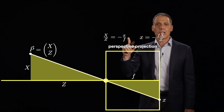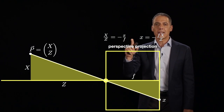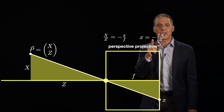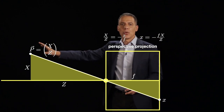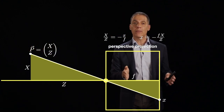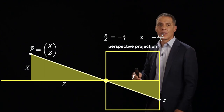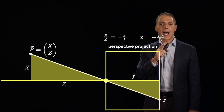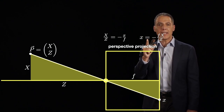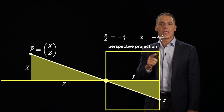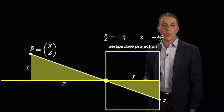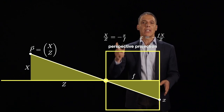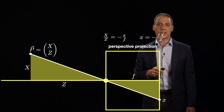Writing this differently: little x equals minus f times X over Z. Given a point in the world (big X, big Z) and a camera with known focal length f, this equation tells me where the projection of that point appears on the back of the camera. This is the perspective projection equation, and even modern cameras still exhibit this basic relationship.